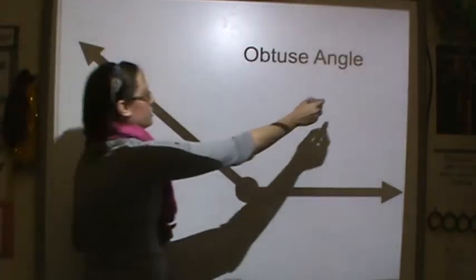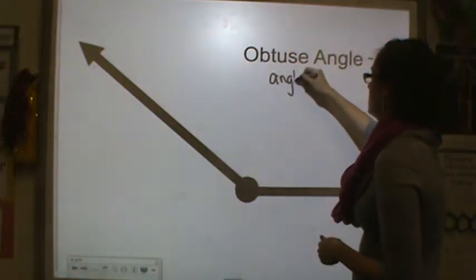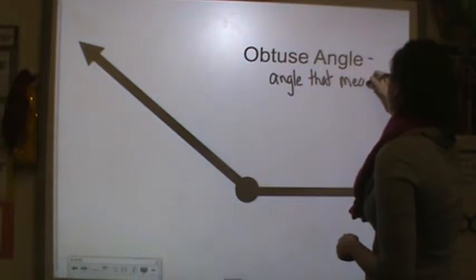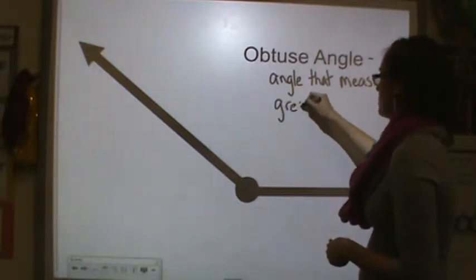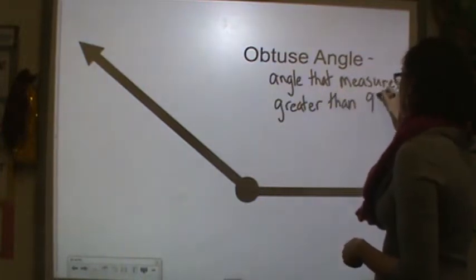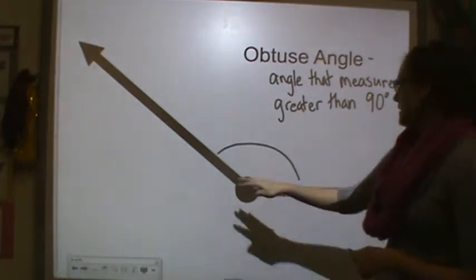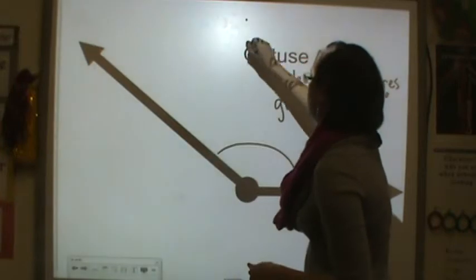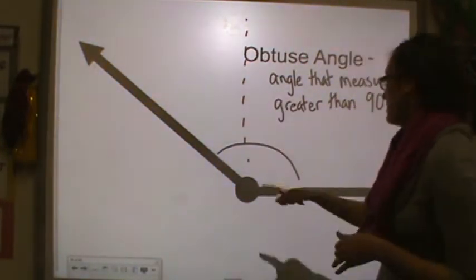This is an obtuse angle. An obtuse angle is an angle that measures greater than 90 degrees — it is wider than 90 degrees. Here it is: this is wider than our 90-degree angle. Because the 90-degree angle would look like this — it's wider than that — so it's obtuse.